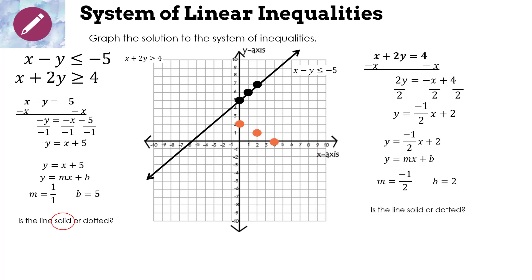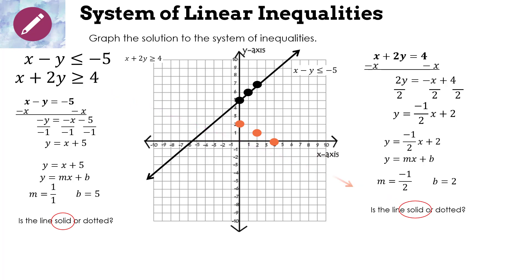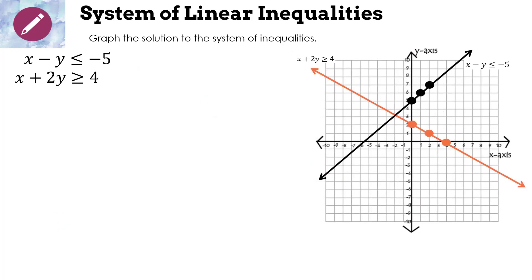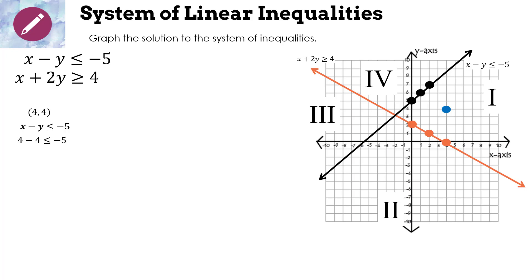Is this line solid or dotted? Looking back at the original inequality 'greater than or equal to,' it's going to be solid. Label the regions 1, 2, 3, 4. Test region 1 with (4, 4): first inequality gives 4 − 4 = 0 — is 0 ≤ −5? Not true, so region 1 is not the solution.